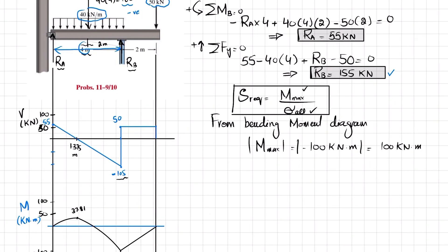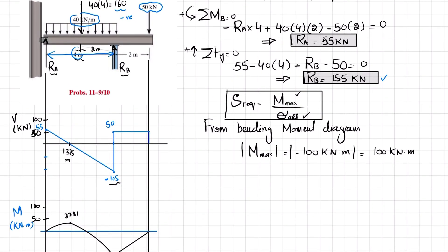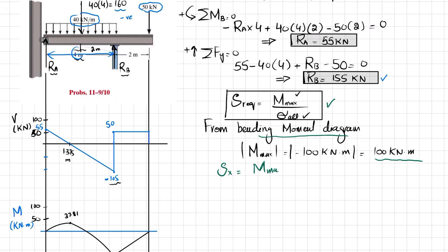We then draw the shear force and bending moment diagram — I have discussed in detail how to draw these for this loading in problem 11.9. Now we move toward the required section modulus. Using the bending moment diagram, the maximum bending moment is 100 kilonewton·meters.